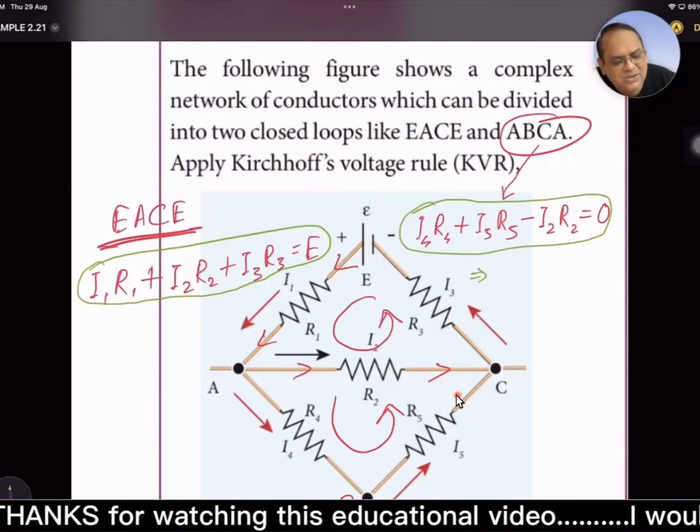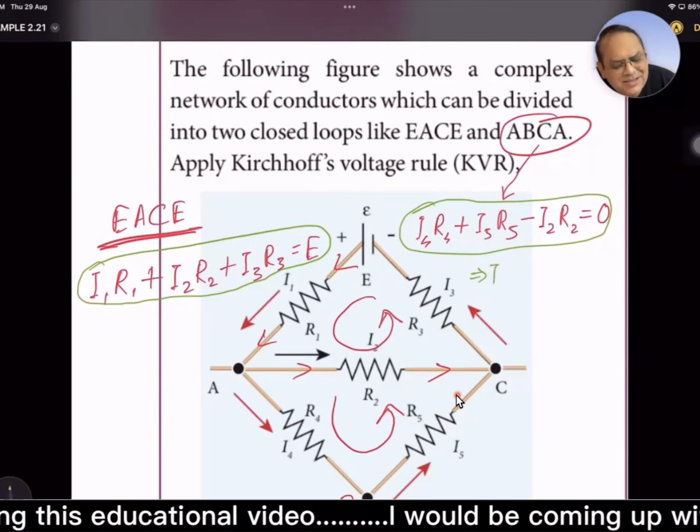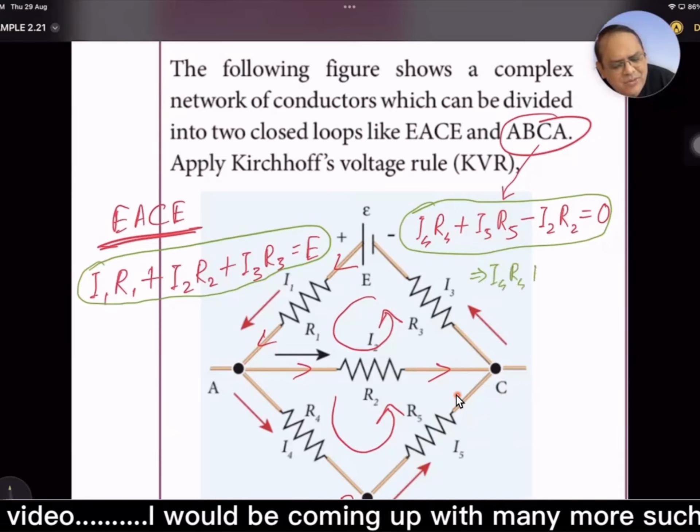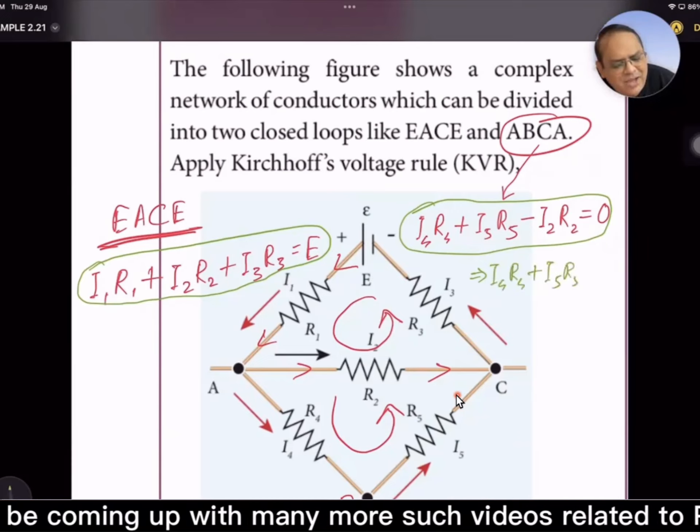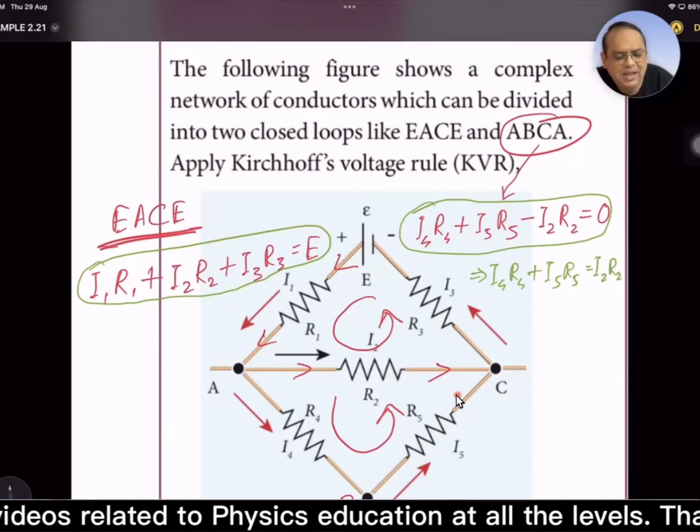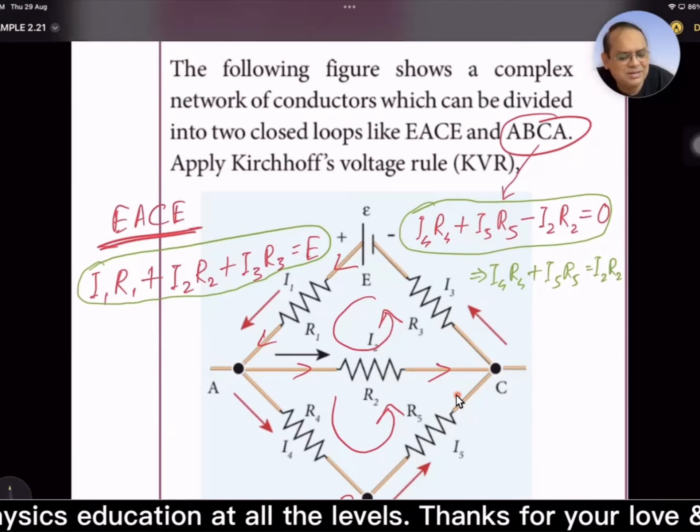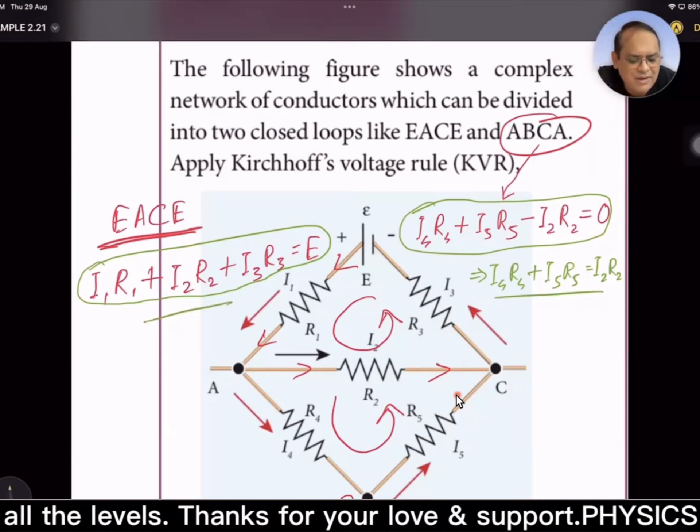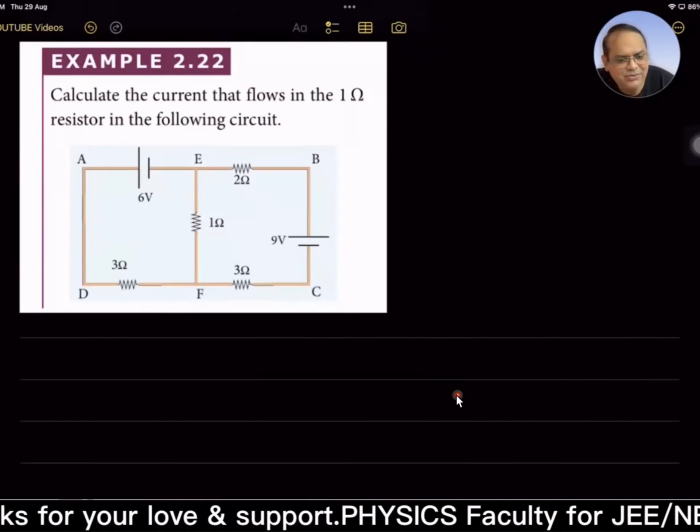But this illustration has been given only to explain the formation of equations. It is not a proper numerical. We will be further solving. It could be written as I₄R₄ + I₅R₅ = I₂R₂, and all these are numericals. If we have any problem, we will solve.